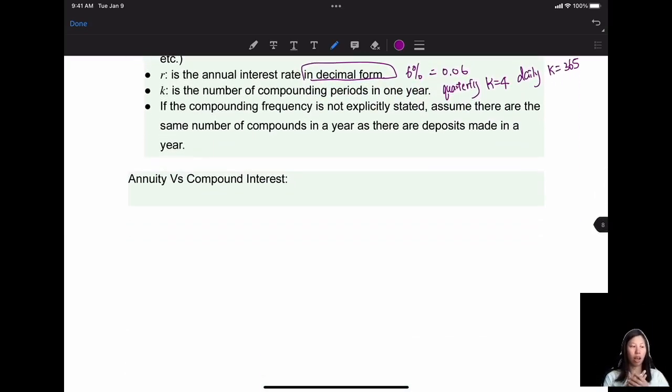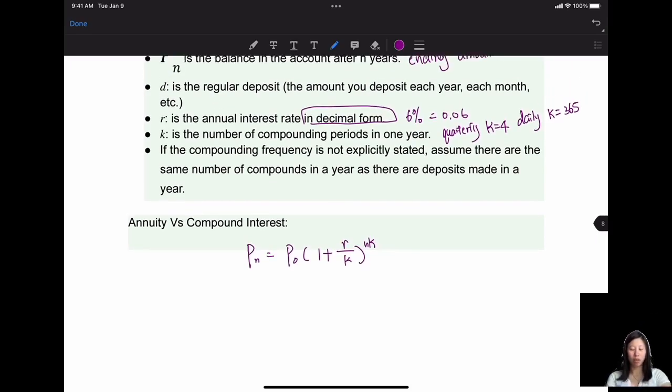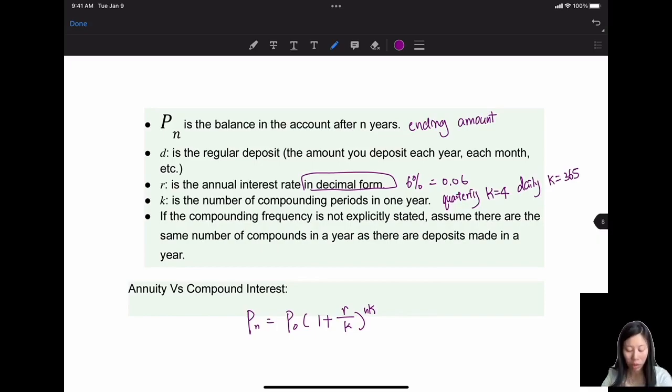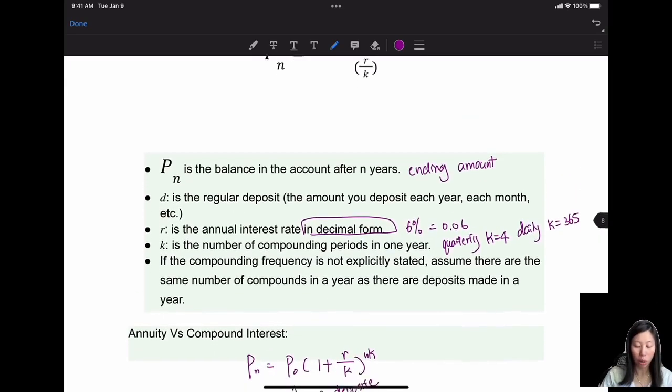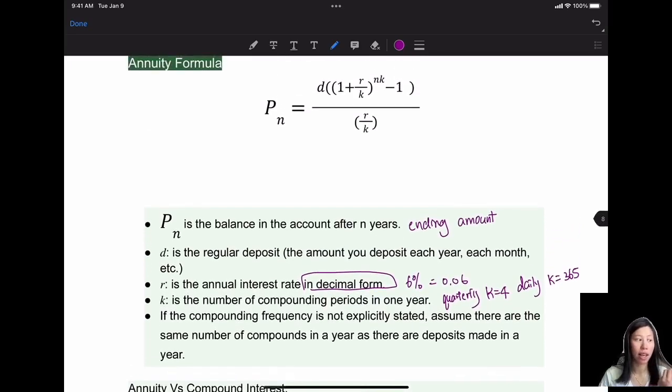What's the difference of annuity versus compound interest? Let's review what is compound interest. Compound interest, we have the formula of P_0 times 1 plus R over K to the N times K. The difference is compound interest is you put the amount of money into the bank at one time. So that means you only have one deposit. Whereas annuity is, you will have multiple recursive deposits.